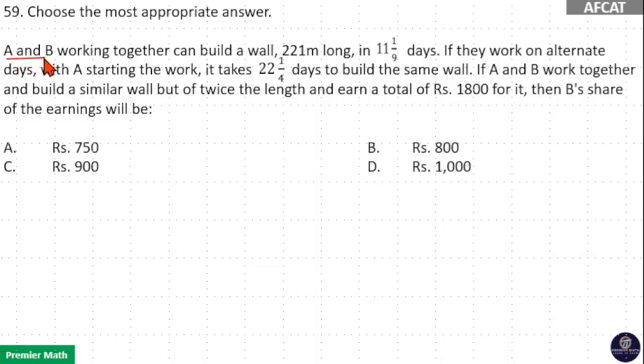Choose the most appropriate answer. A and B working together can build a wall 221 meters long in 11 and 1/9 days. If they work on alternate days with A starting the work, it takes 22 and 1/4 days to build the same wall.